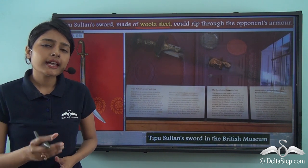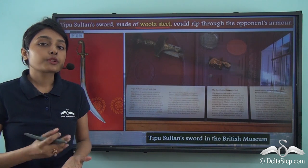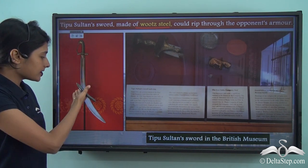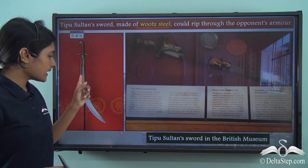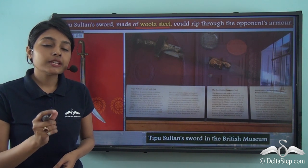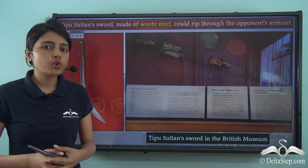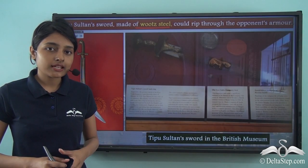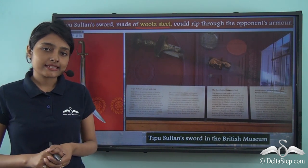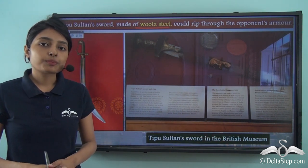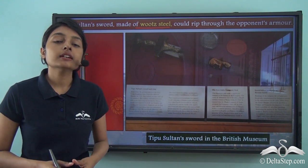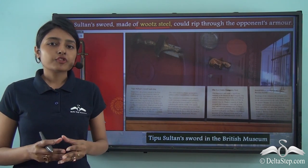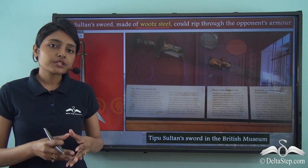Wootz is a kind of high carbon steel that was used for the production of arms like swords and other weapons. In wootz steel we can see a flowing water-like pattern, which was because of the presence of carbon elements in iron. This wootz steel sword was so powerful that Tipu Sultan used it even till the last moment of his life — he had his sword clutched in his hands when he died. His sword is now part of a collection in the British Museum, and it was made of wootz steel, a particular kind of high carbon steel produced in the Indian subcontinent.